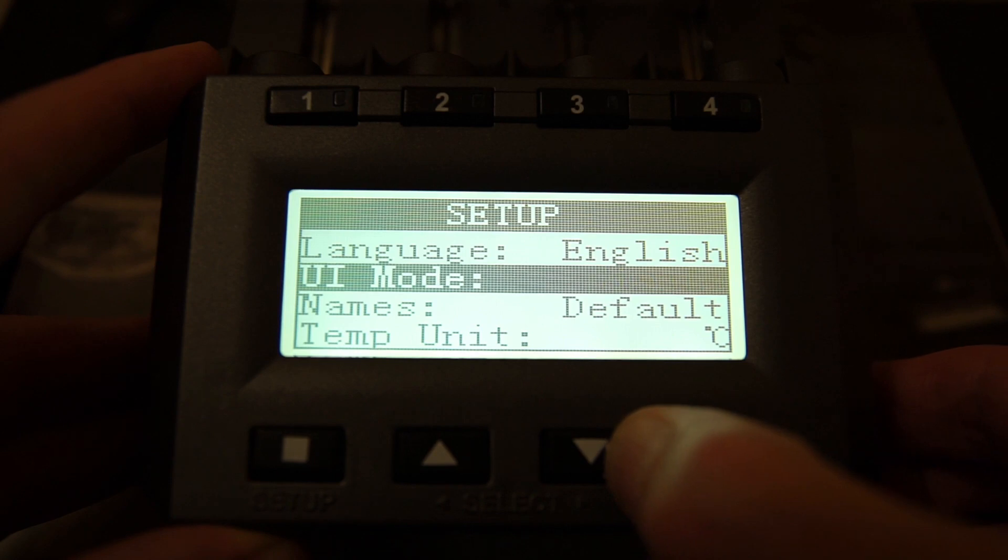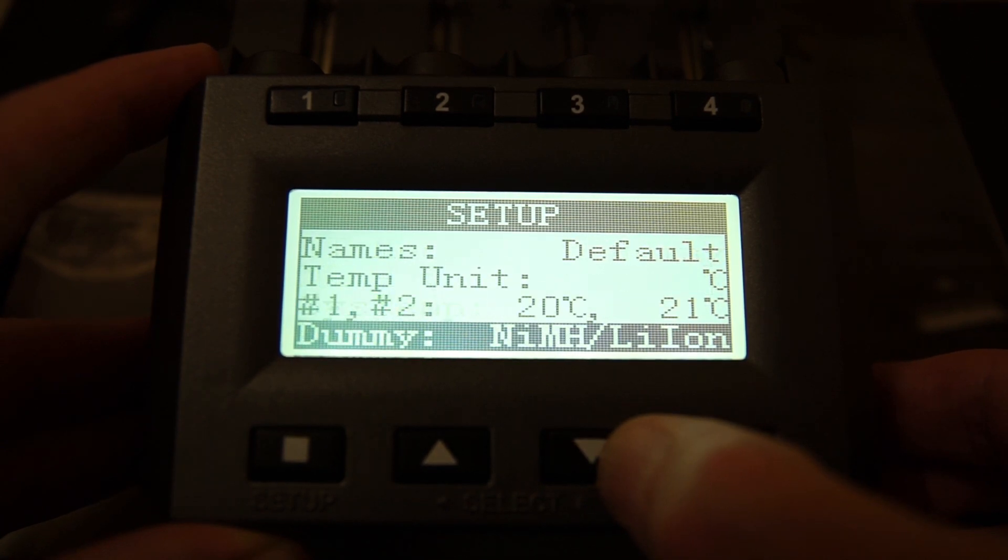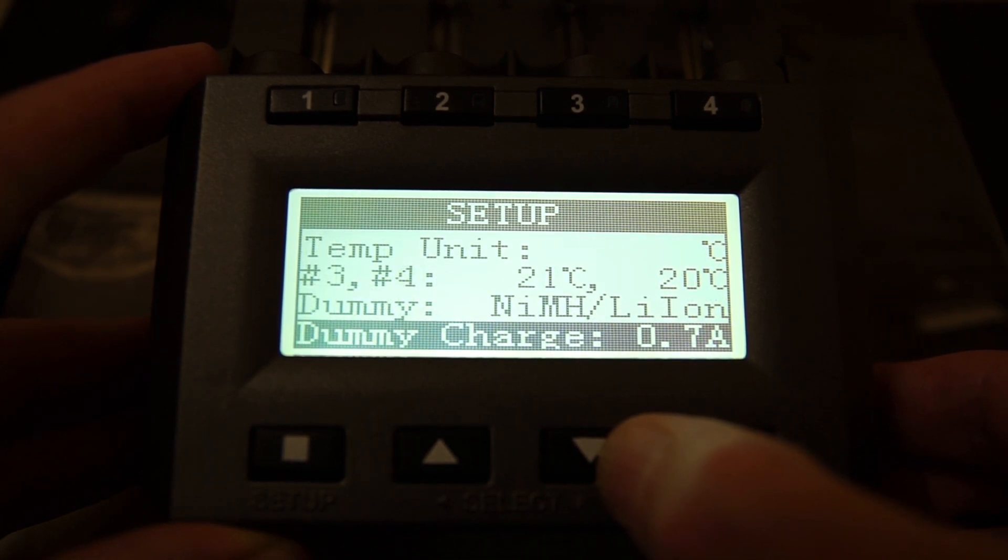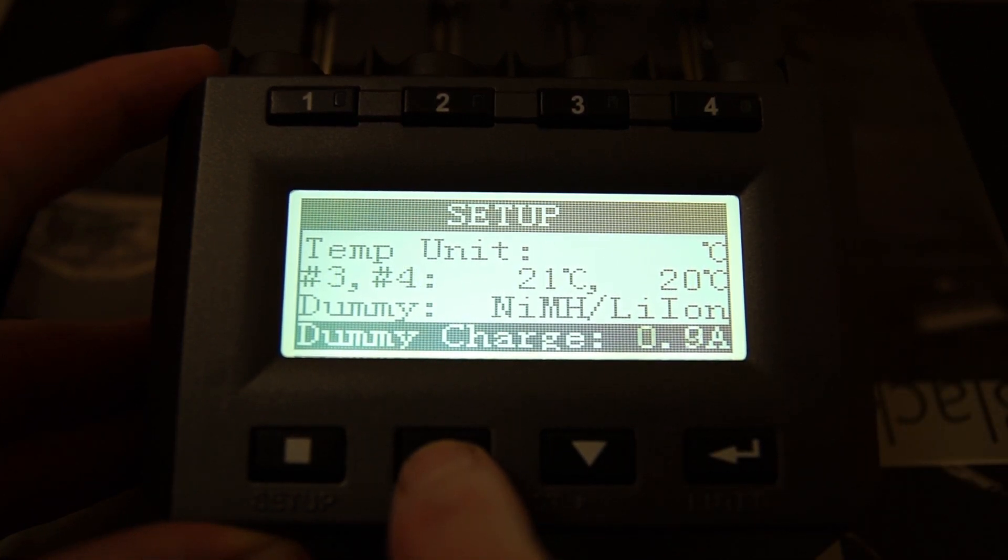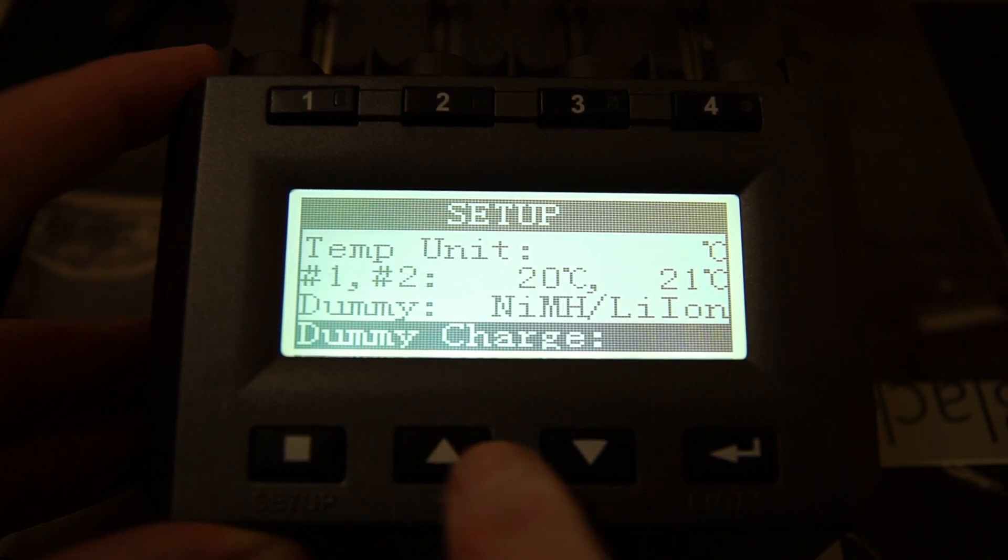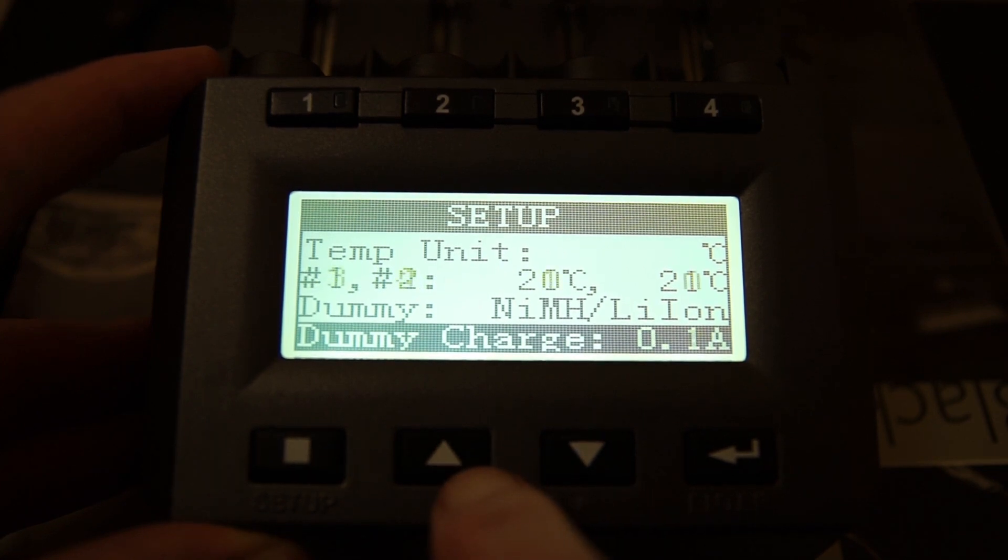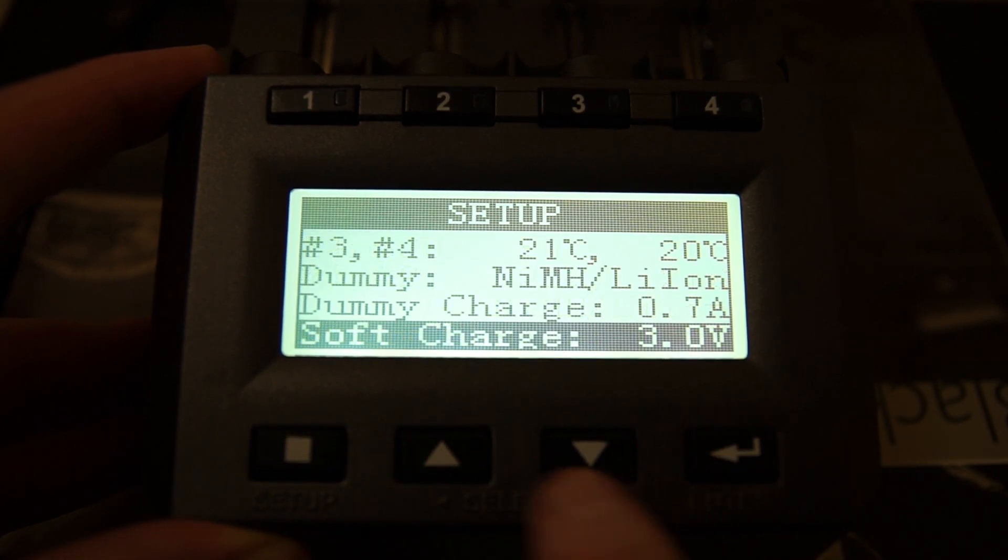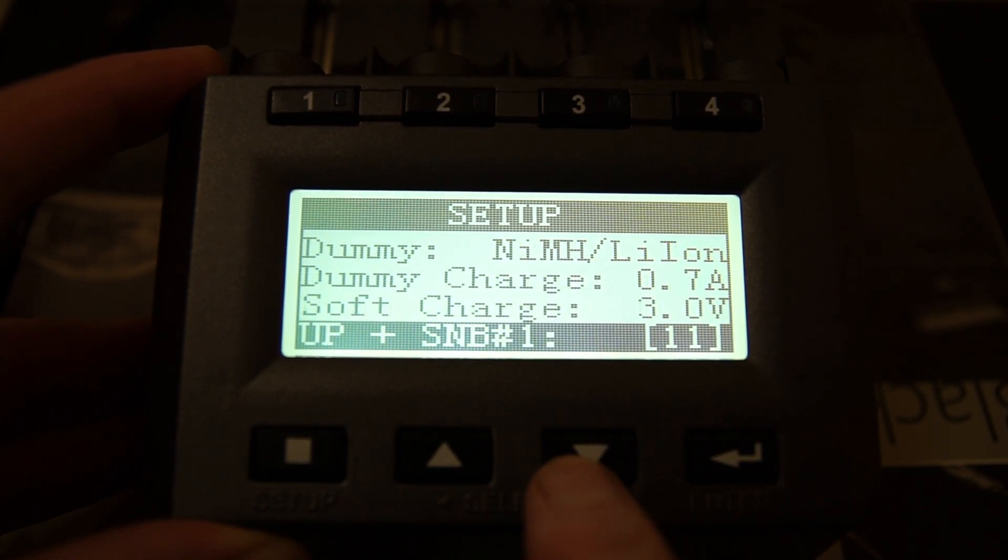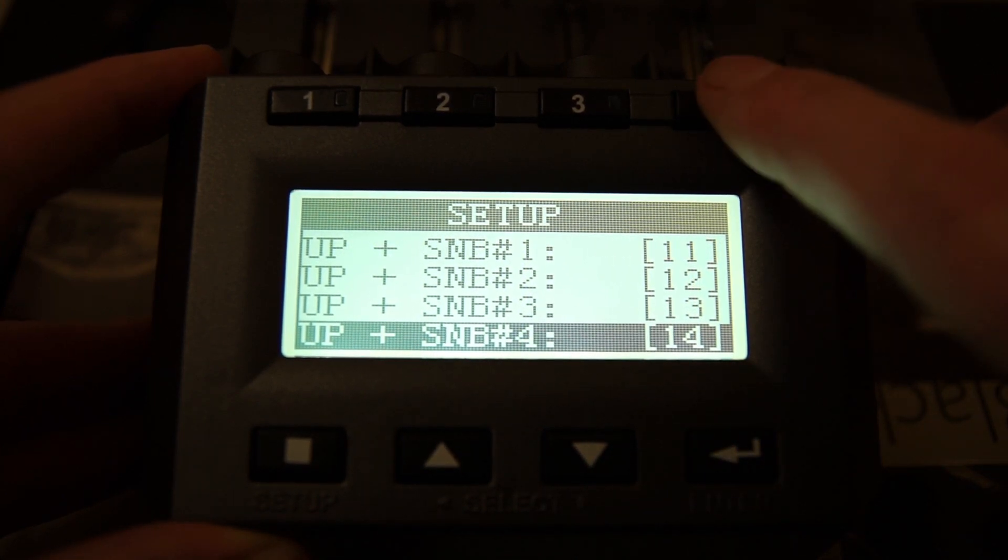I'll try and cover the main areas of the setup menu. Your UI mode: dummy, simple and advanced. The dummy lets you do basic charging and adjust the current. The simple is somewhere in between, gives you a few more options. The advanced gives you the full settings on everything. You can see you can actually adjust the dummy charge or the default charging on the unit. That's 700 milliamps out of the box, but what you can do is just pick the rate that you want to have the default charging, and that is pretty useful feature to have.